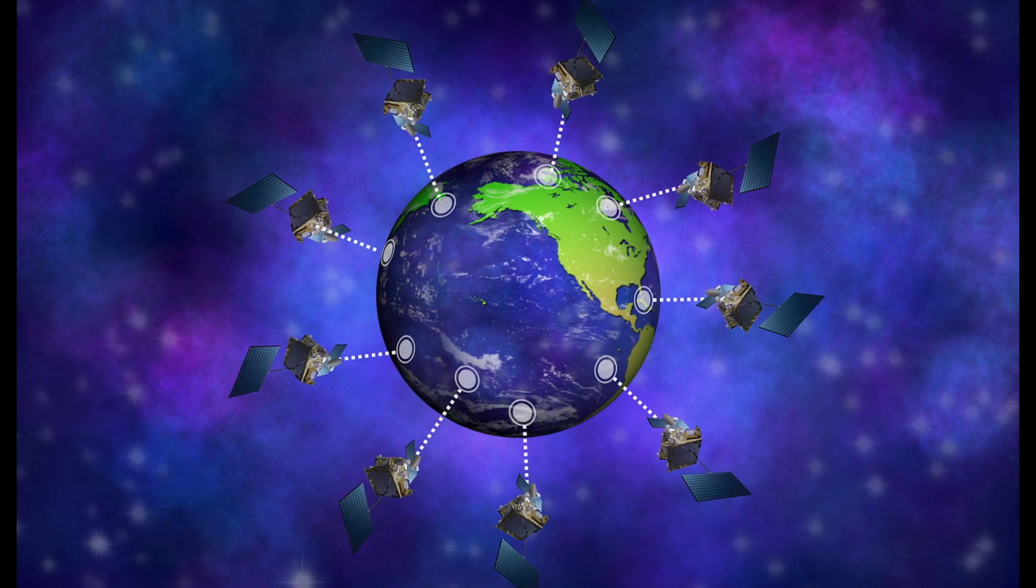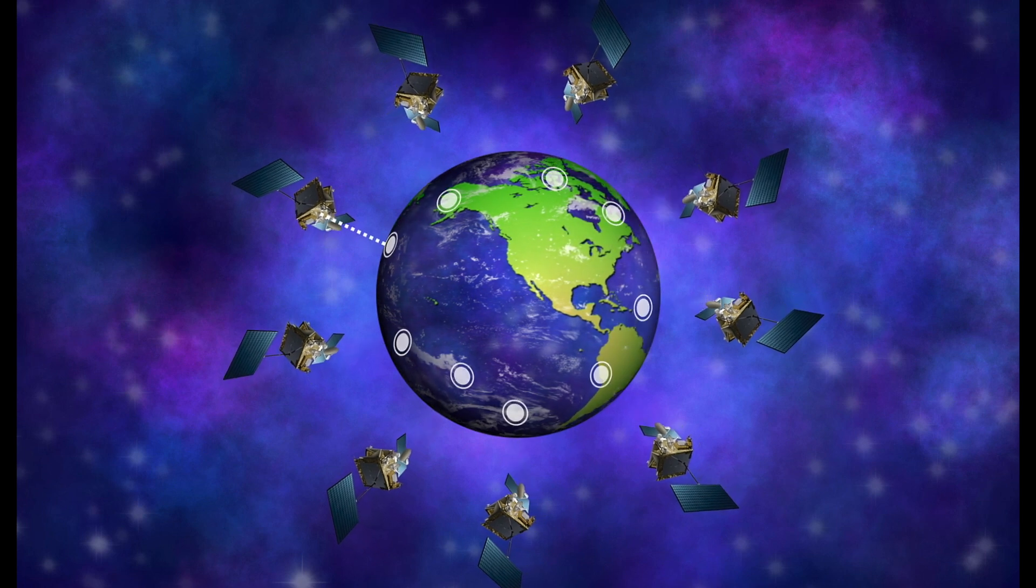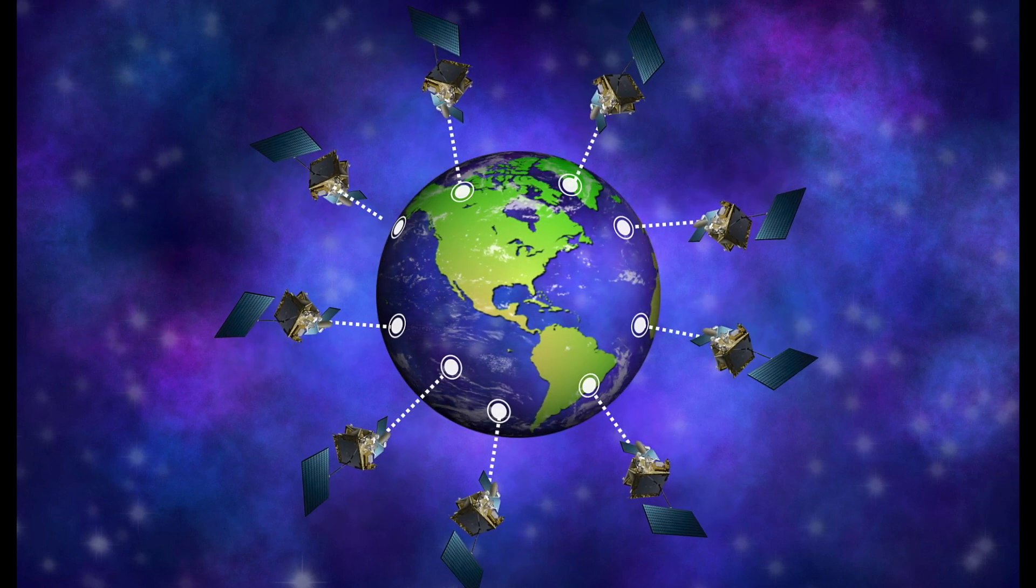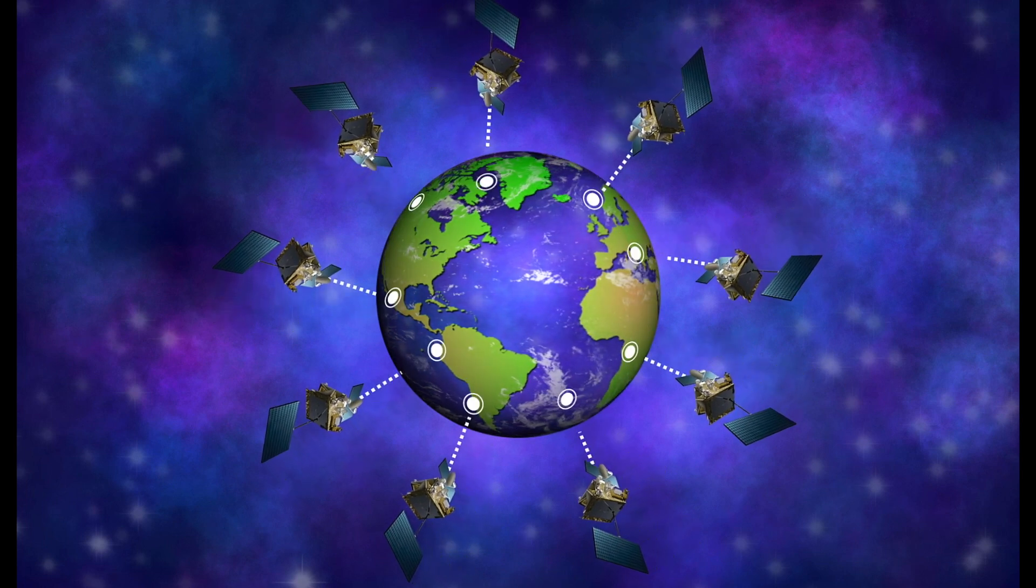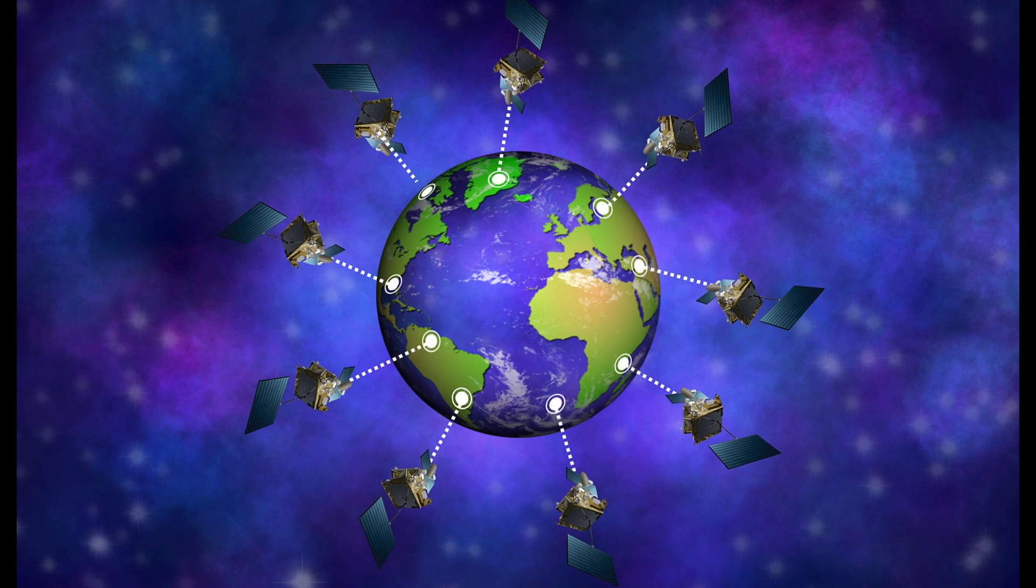By contrast, Starlink satellites are much closer to Earth, which means the satellites can communicate with each other and send and receive data at rapid speeds and to anywhere on Earth, even over the oceans in remote areas.